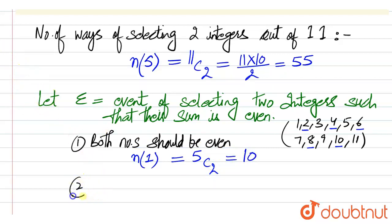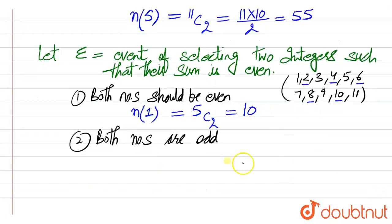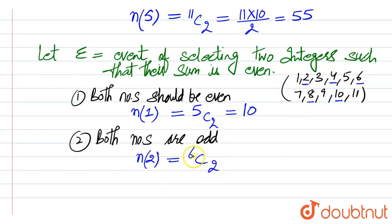Similarly, the second case is: the sum is also even when both numbers are odd. Both numbers are odd — then also the sum is even. The number of elements in the second case: out of the 6 odd numbers available, we have to choose any two numbers. This is done in 6C2 ways, which is equal to 15.